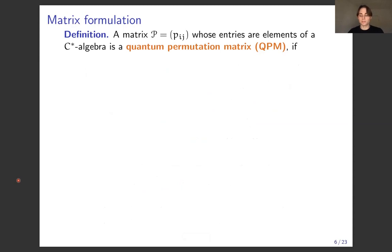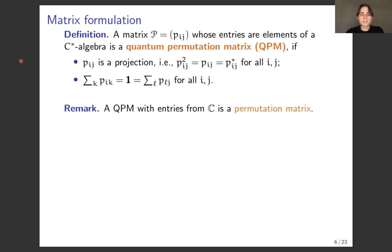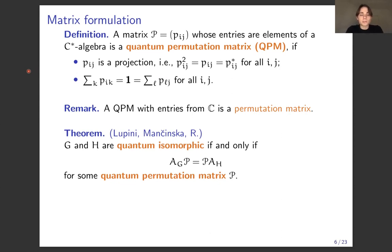We use a quantum permutation matrix, where instead of numeric entries we have elements of some C*-algebra. Each entry is a projection — it squares to itself and equals its own adjoint — and summing along any row or column gives the identity element. If the C*-algebra is just the complex numbers, this reduces to an ordinary permutation matrix. The theorem, proved with Martino Lupini in previous work, is that graphs G and H are quantum isomorphic if and only if there exists a quantum permutation matrix P satisfying A_G P = P A_H.